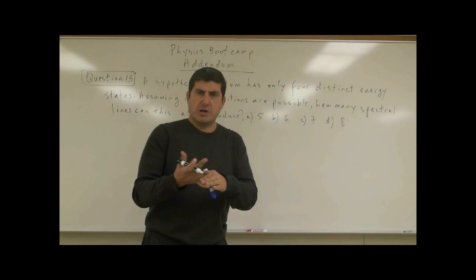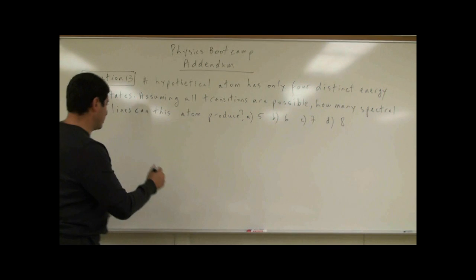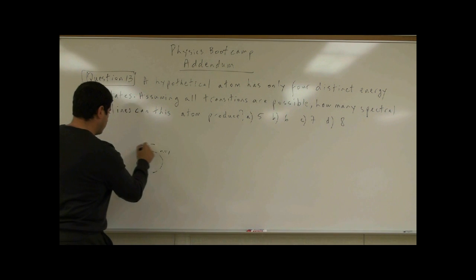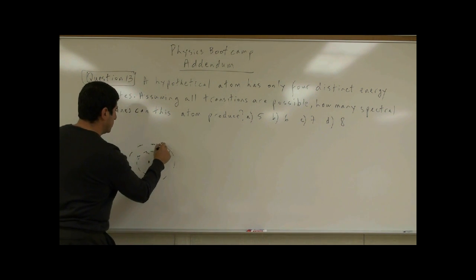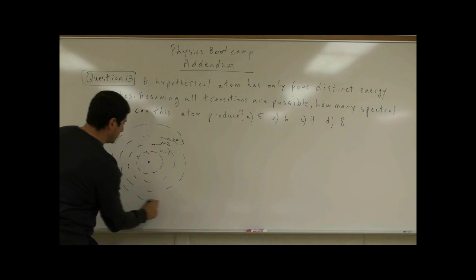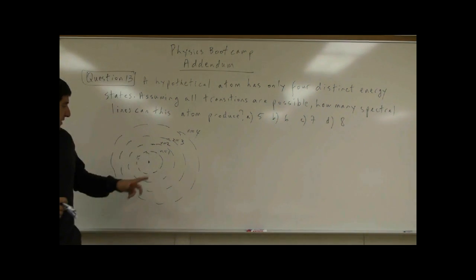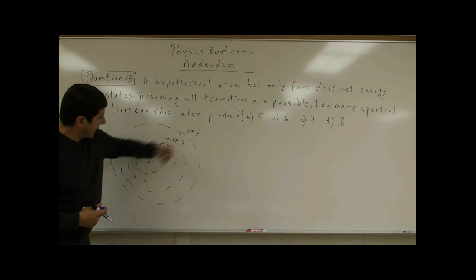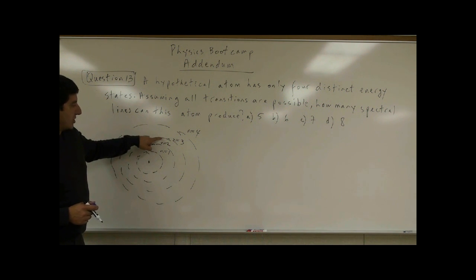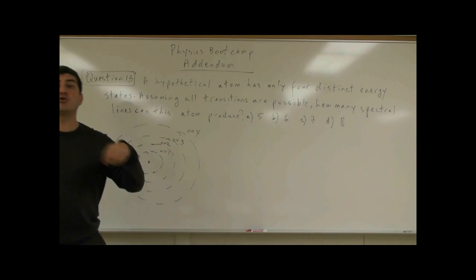The problem tells us that we have four energy states: n equals 1, n equals 2, n equals 3, and n equals 4. We know from physics that the higher the n number, the higher the energy state of the electron. When the electron jumps from a higher energy down to a lower energy, it releases a photon of light and produces a spectral line.